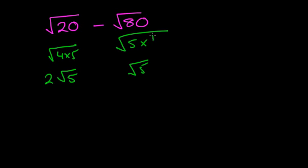Well 5 goes into 80 once with 3 left over, 5 goes into 30 six times. And look, you've now got that nice perfect square. So the square root of 16 makes 4, so I've got 2 root 5 minus 4 root 5 which is going to equal negative 2 root 5.